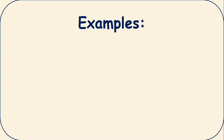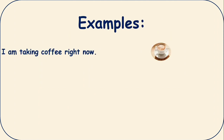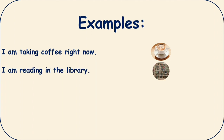Examples. Number one: I am taking coffee right now. It means this is my action which I am doing right now at the moment. Or I can say I am reading in the library — for example, I'm in the library and you ask me what are you doing here, so I can say I'm reading in the library.